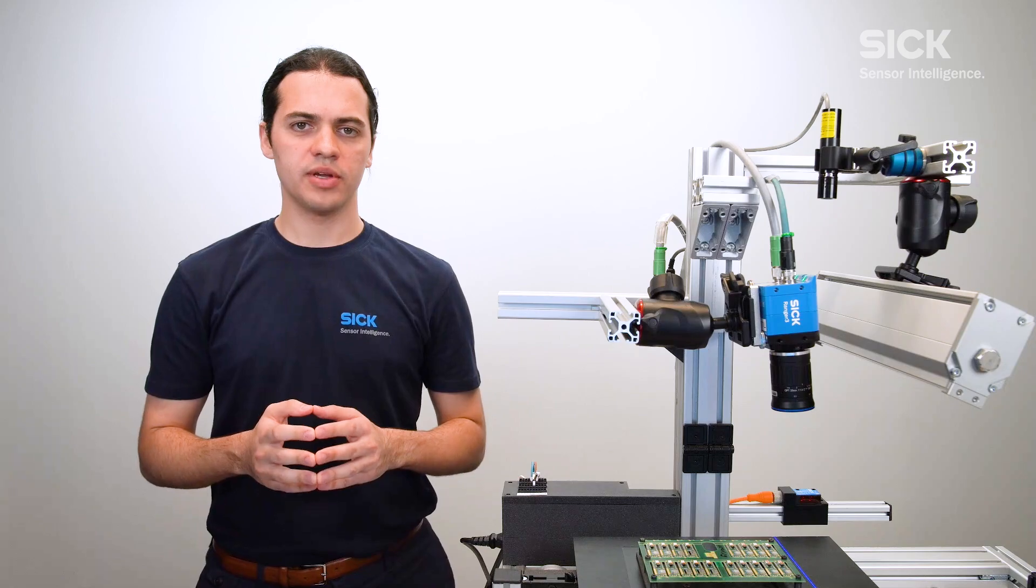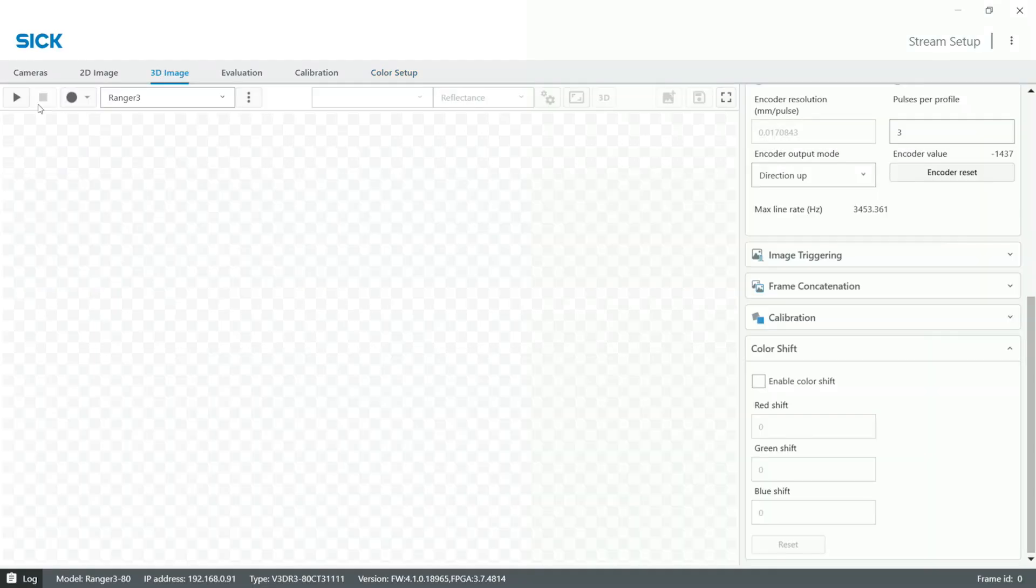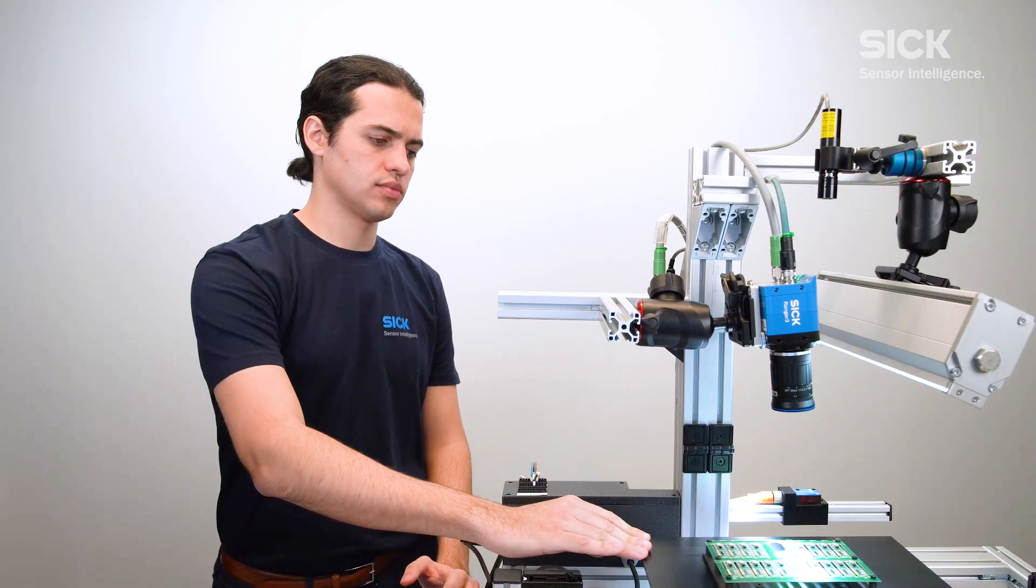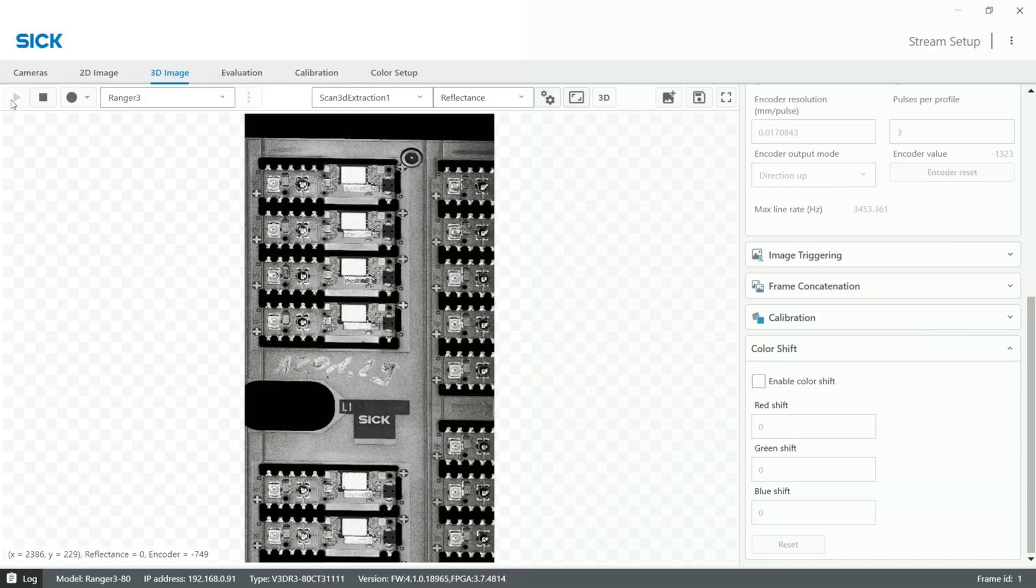Now let us go ahead and make a new scan. In the RGB image, we can inspect things that we could not inspect in the 2D reflectance image.